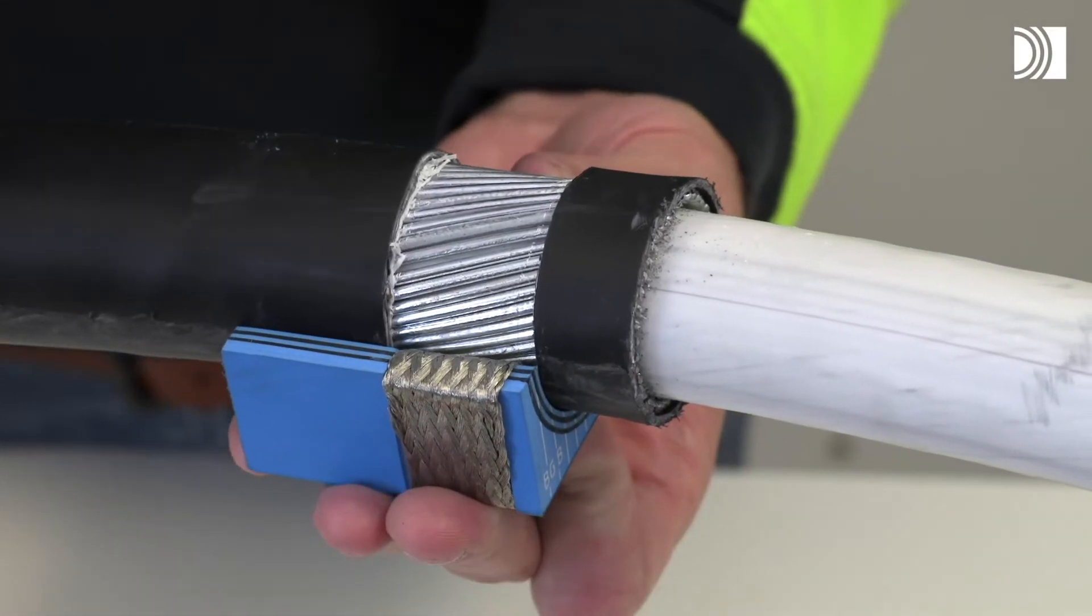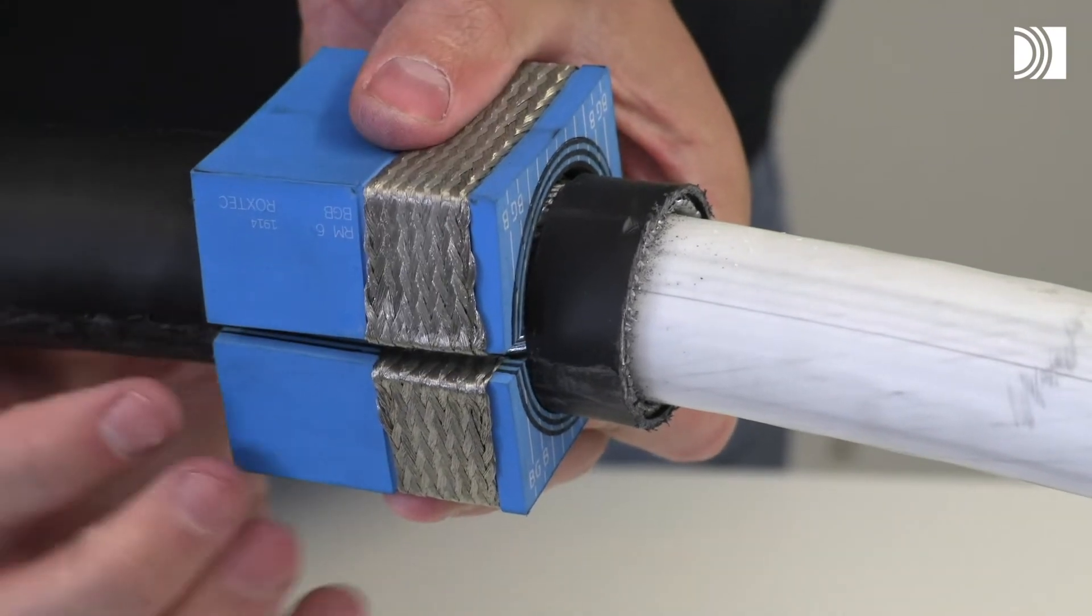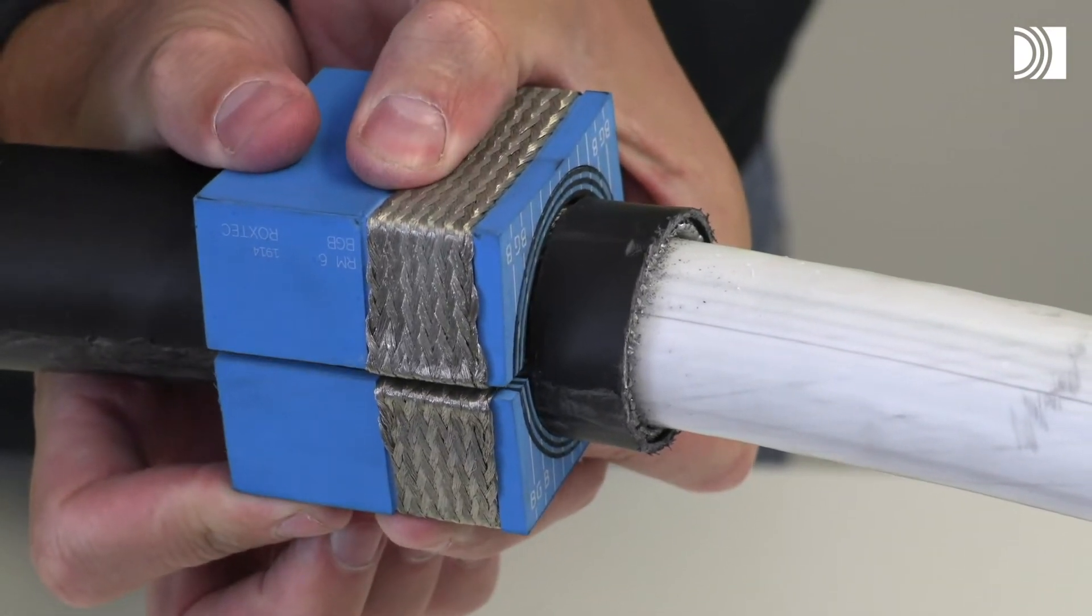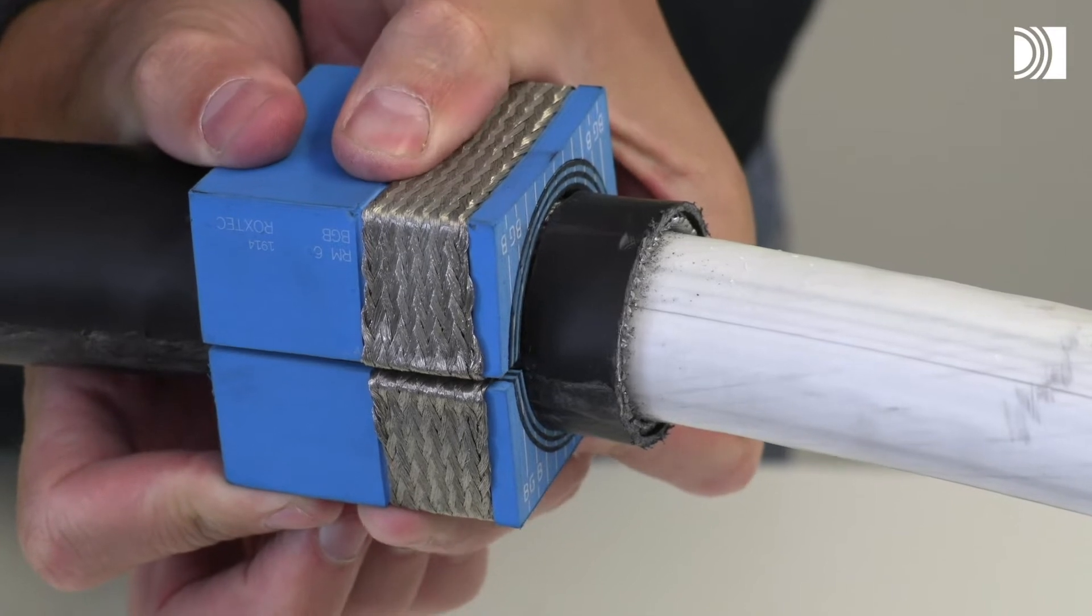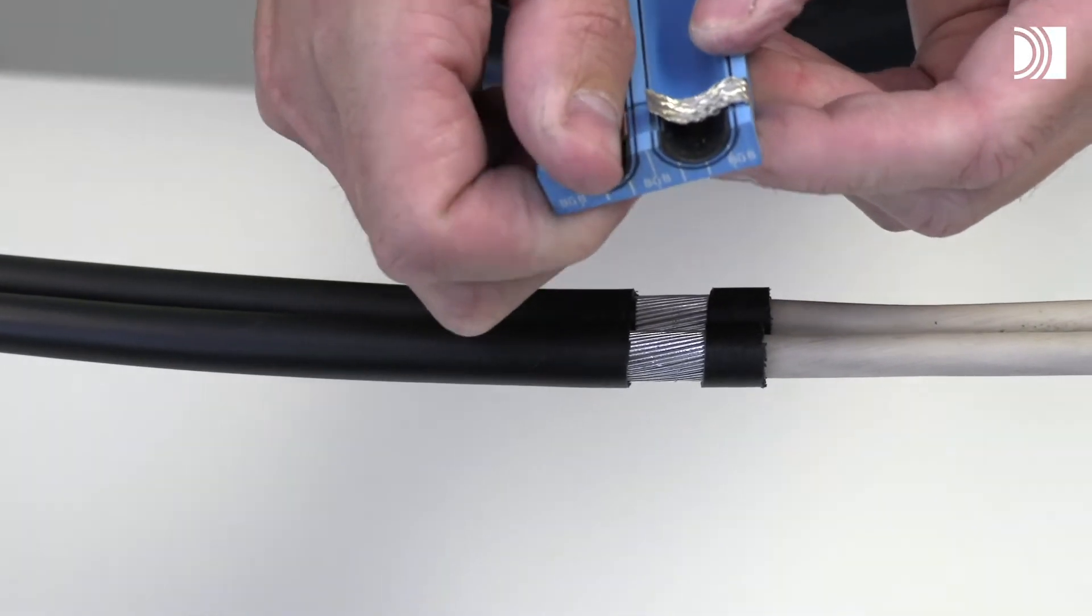There must be a visual gap of 0.1 to 1.0 millimeters between the two halves when fitting the cable. Fold the braid tightly inside the module.